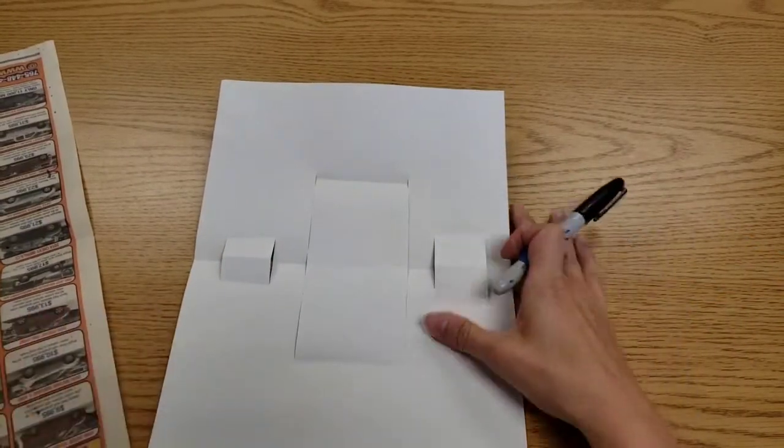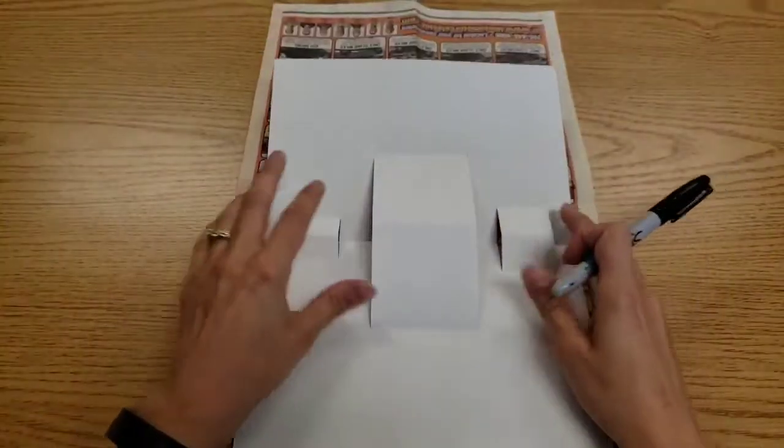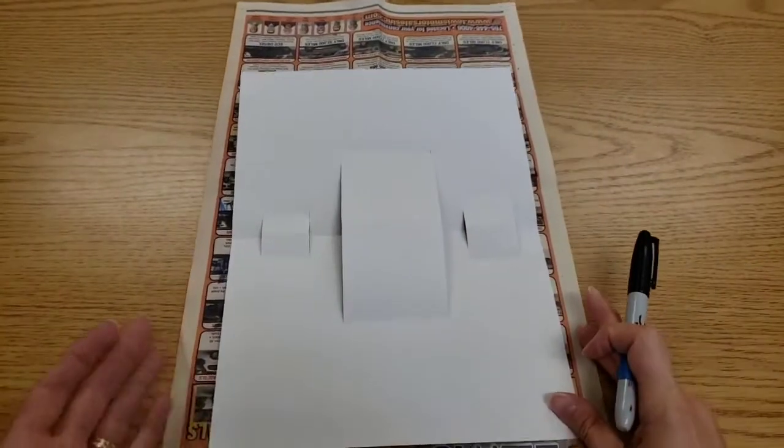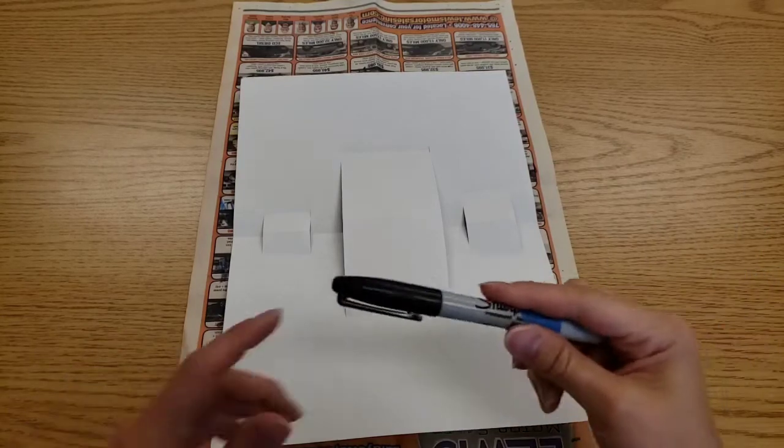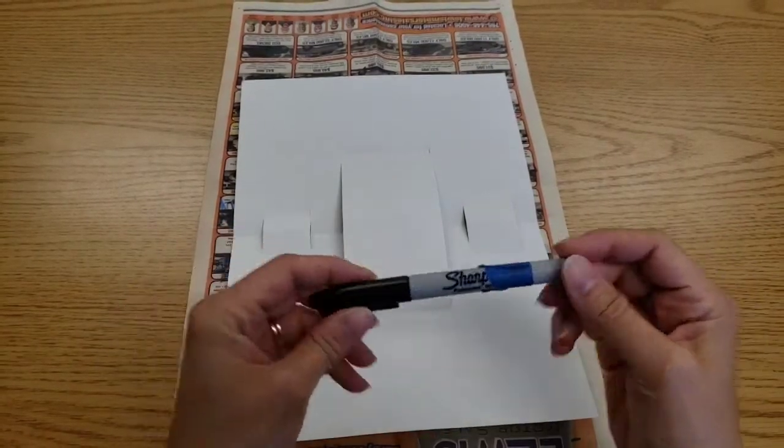I am going to draw with a sharpie. So I have newspaper underneath. If you're drawing with a regular Crayola marker, you don't need the newspaper. It's just if you're drawing with a permanent marker.